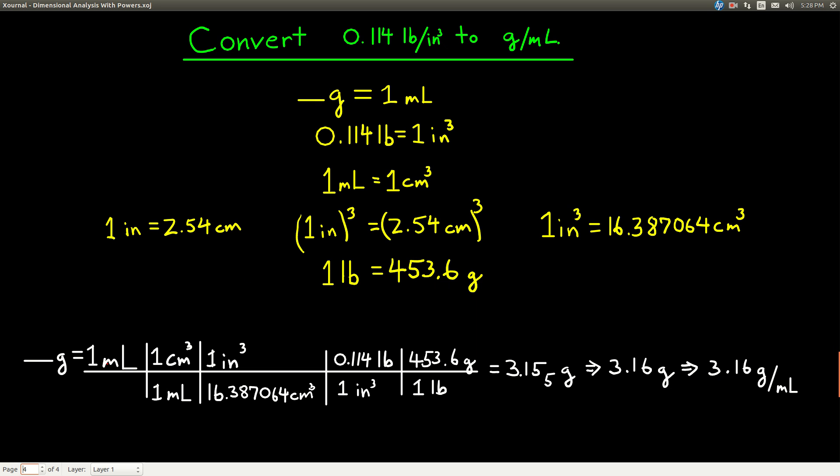We start out with how many grams is equal to 1 milliliter. That means we need milliliters in the bottom, so we put that in the bottom. Milliliters cancels. Then we have centimeters cubed, so we need centimeters cubed in the denominator. Put it there and it cancels. Then we need inches cubed. We use the inches cubed. Make sure you know where all these guys are coming from. And then we have pounds. We need to cancel pounds, so we look up here. Cross it off. And we're left with grams, which is what we want.